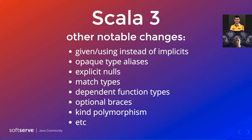Match types, dependent function types, and kind polymorphism are all hardcore type-level features that are very interesting. Optional braces are a very controversial change — this is about dropping curly braces from the language. Currently Scala 3 allows you to write with curly braces or without, like Python.